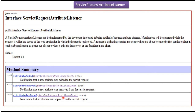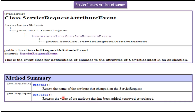Next we will see ServletRequestAttributeEvent. It has two methods: getName and getValue. Using getName, we can get the name of the attribute that changed on the ServletRequest. And using getValue, we can get the value of the attribute that has been added, removed, or replaced.